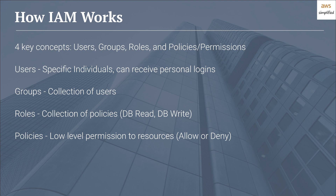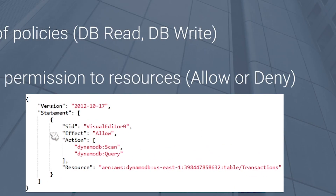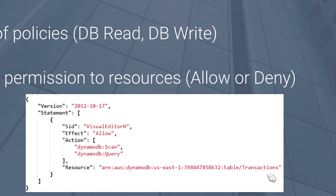Here's an example of what a policy looks like in JSON format. We have a version and a statement — this is where the meat of the policy is. We have a SID, which stands for statement ID, and that can be anything. We have an effect, which is 'allow' in this case — it can be either allow or deny. We have an action, which specifies the permissions we want to permit: DynamoDB scan and DynamoDB query. We also have a resource field — in this example we're providing a specific AWS resource, so this policy only gives users the scan and query operations on that specific table. Optionally, you can use a wildcard (a star) here, which would give access to all DynamoDB tables.